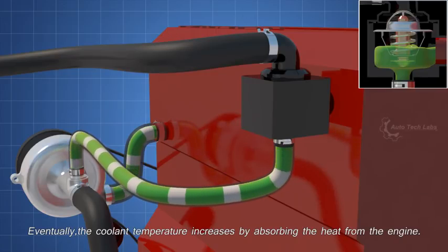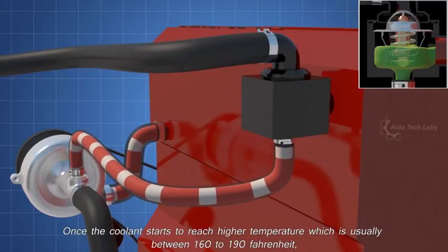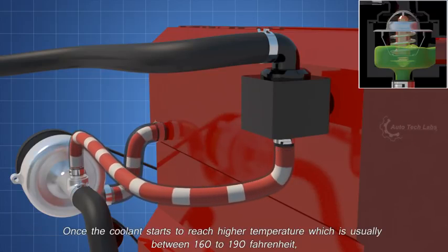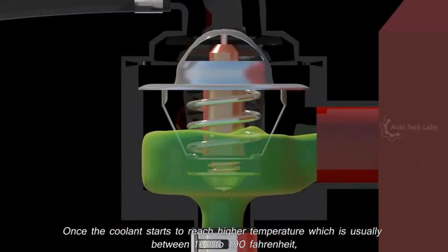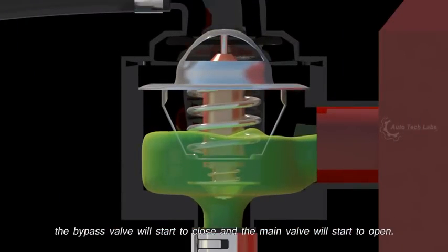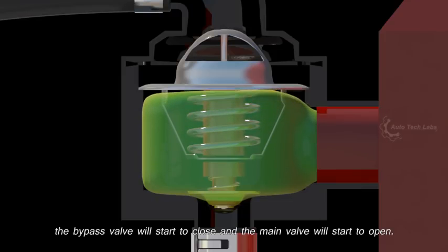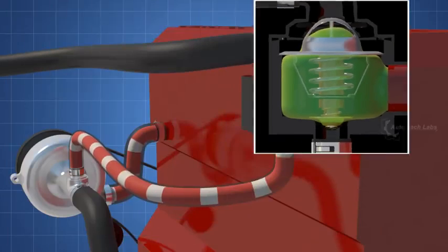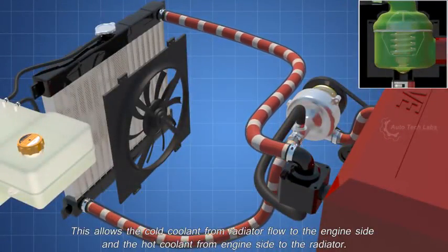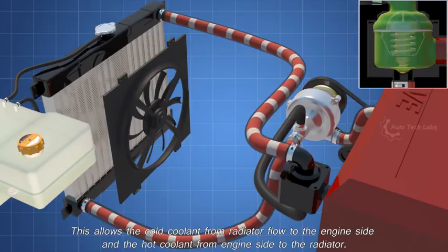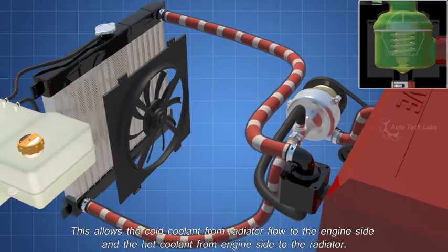Eventually, the coolant temperature increases by absorbing the heat from the engine. Once the coolant starts to reach higher temperature, which is usually between 160 to 190 Fahrenheit, the bypass valve will start to close and the main valve will start to open. This allows the cold coolant from radiator flow to the engine side, and the hot coolant from engine side flow to the radiator.